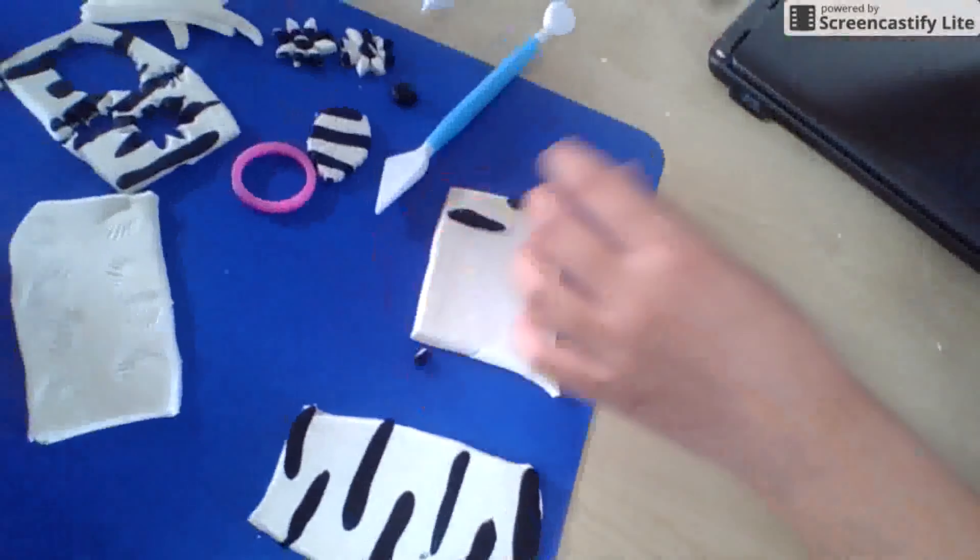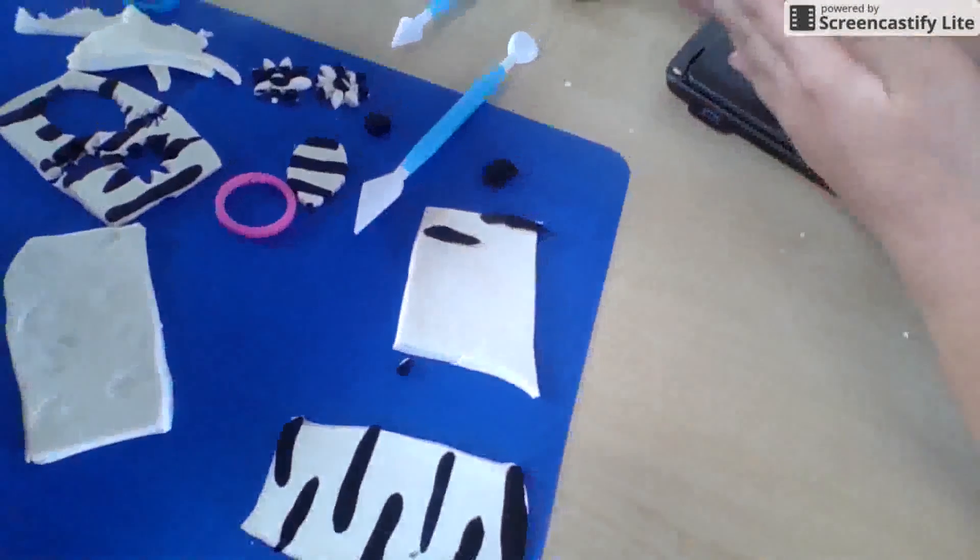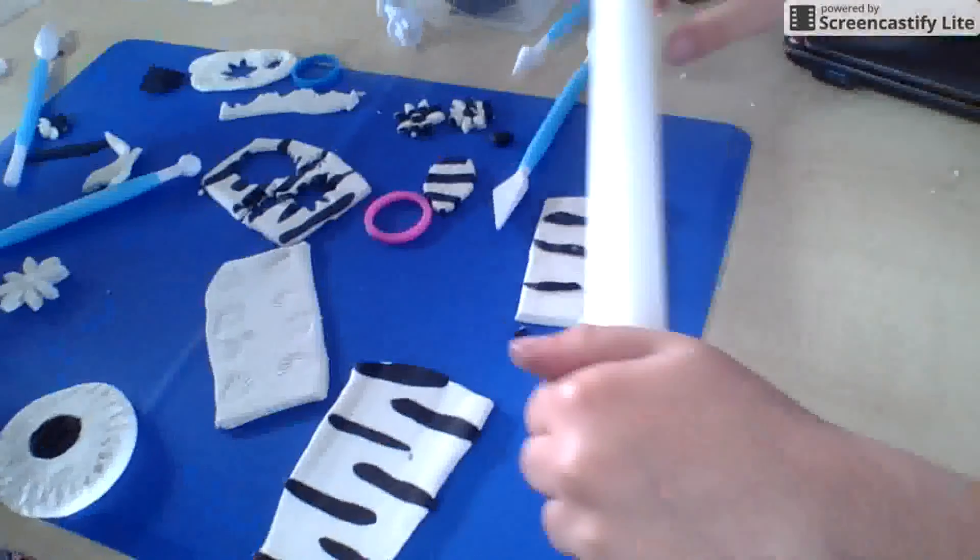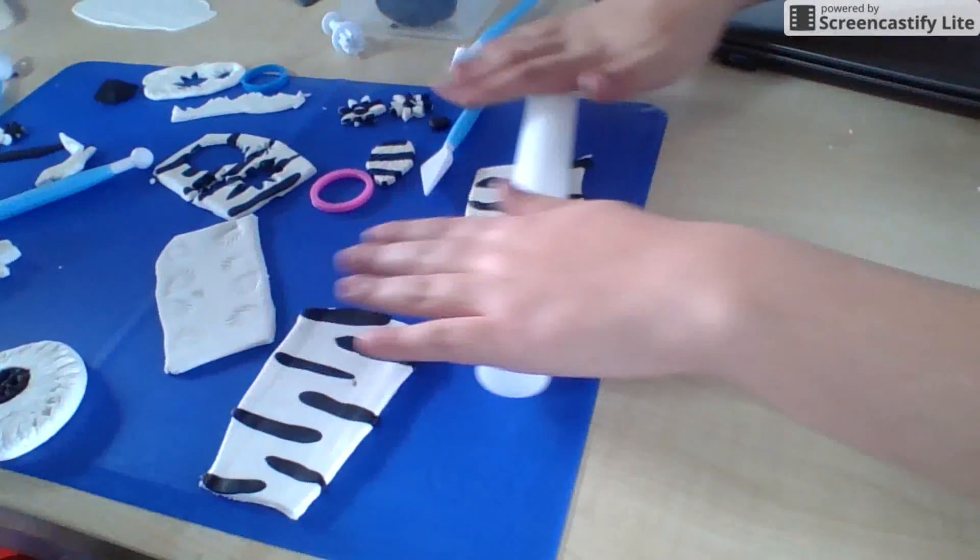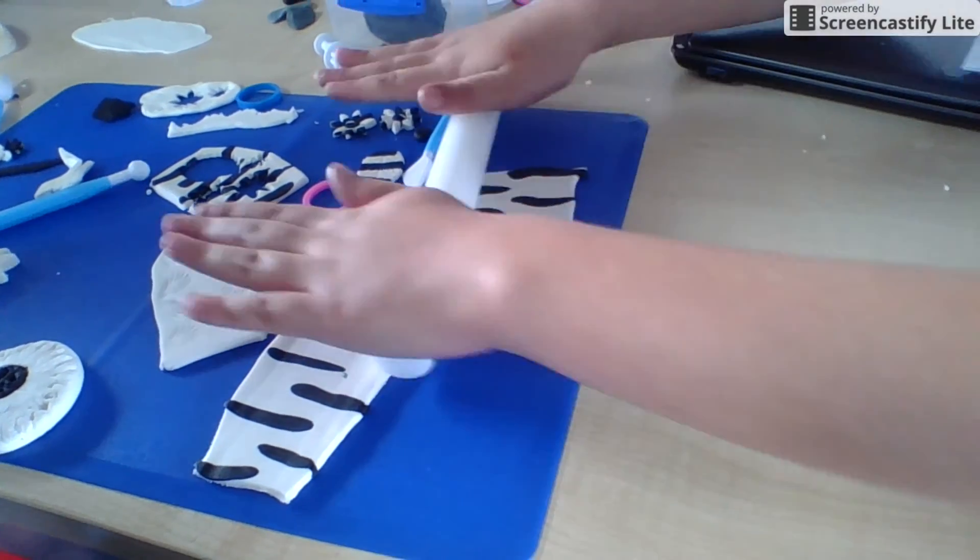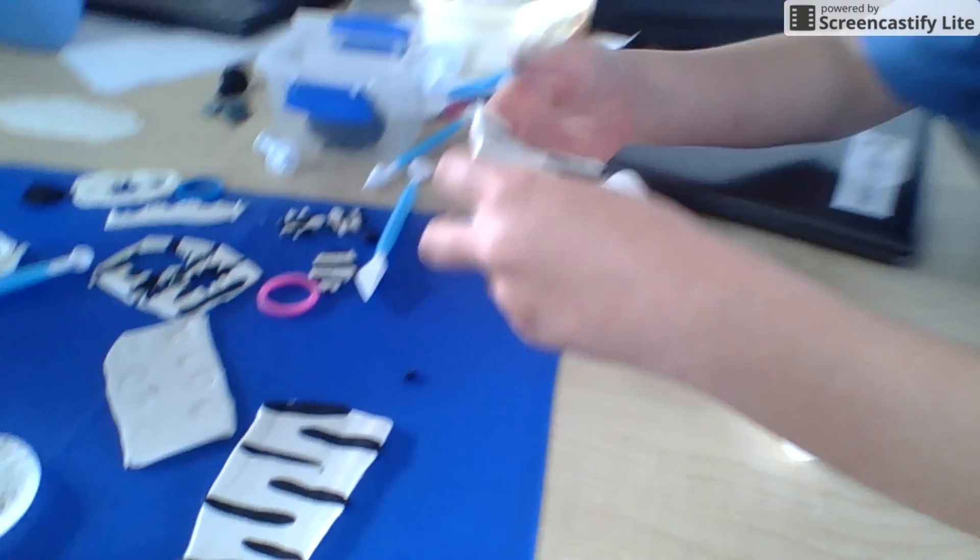Then you stick them on. So then after you've got all the stripes down you roll it out with a silicone roller as the best. And then you roll out. And then you've got Zebra Stripes.